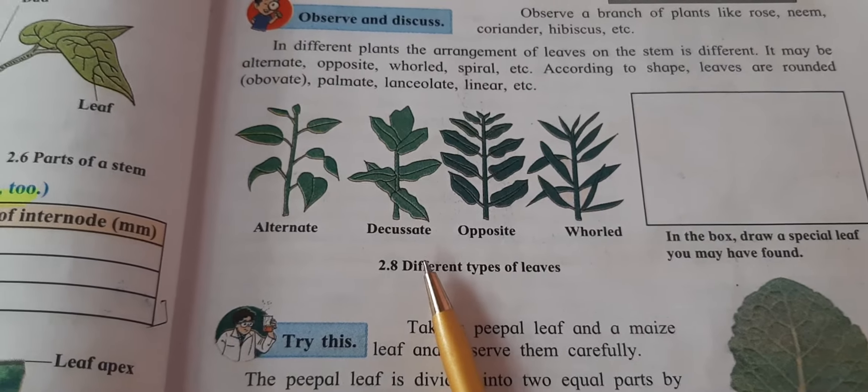On the other hand, if we see this maize leaf, all the veins are parallel, running from the leaf base to the leaf apex. The veins run parallel to each other from bottom to top. This type is called parallel venation. Thus this leaf has a reticulate venation pattern.